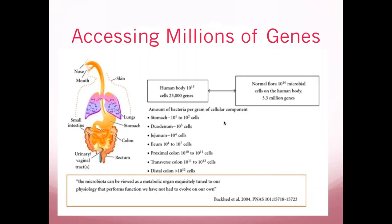When you look at our bacteria, they comprise another 3.3 million genes that we have access to. When you eat something, are exposed to something, or interrelate with your immune system with these bacteria in your intestinal tract, these genes either benefit you or harm you depending on what bacteria you harbor. When we raise sterile, germ-free animals, we lose all those 3.3 million genes, and as mammals we suffer dramatically.